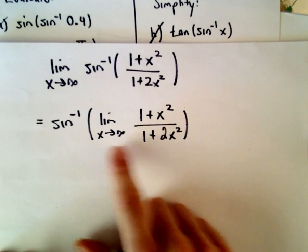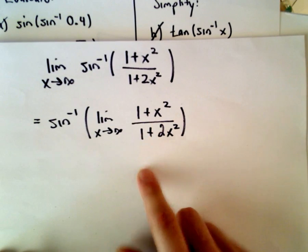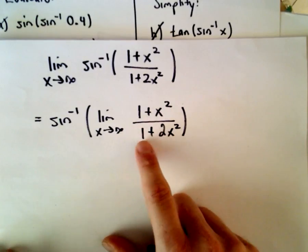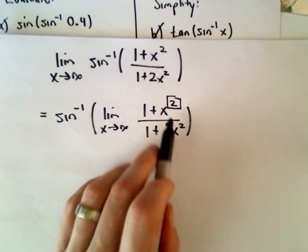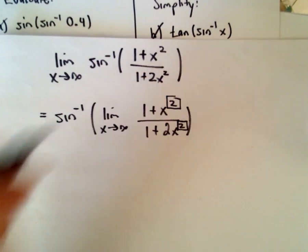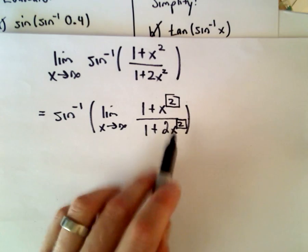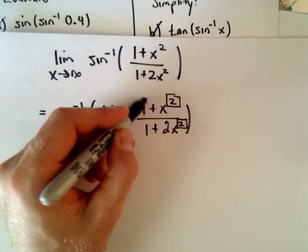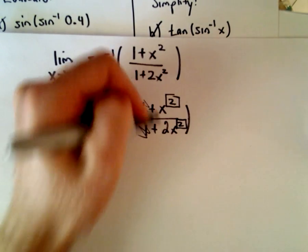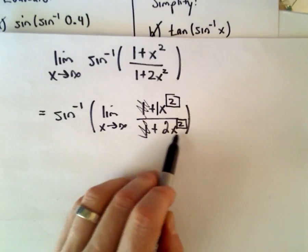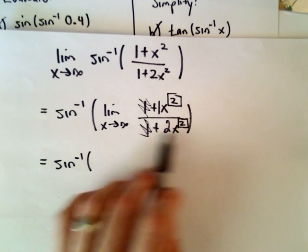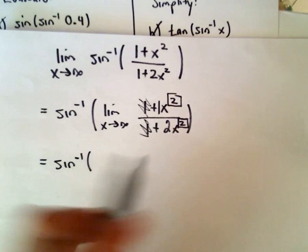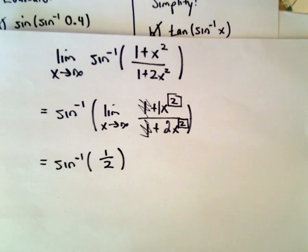Now we're just looking at the limit involving a rational function. You can use this shortcut: if the degree of the numerator equals the degree of the denominator — which they certainly do, both are degree 2 — we look at those leading terms, x squared and 2x squared, and just take the ratio of the coefficients. So we get 1 over 2, which is 1 half.